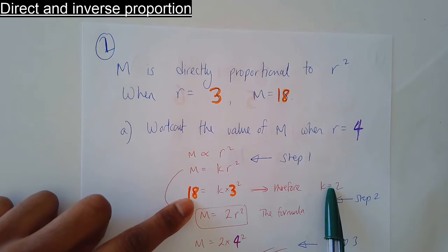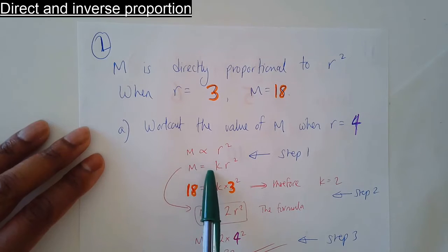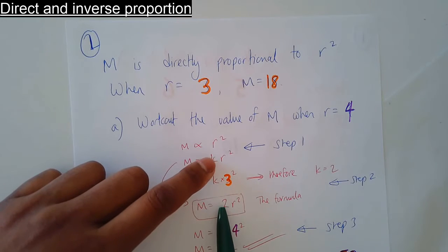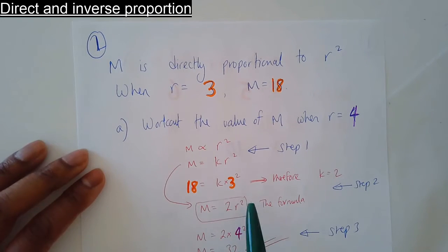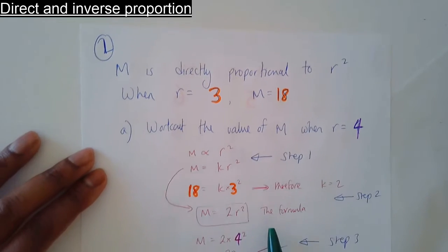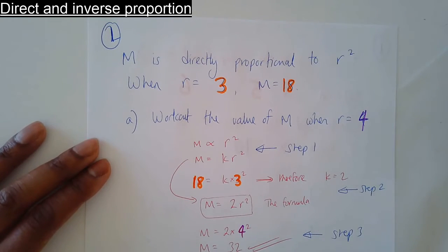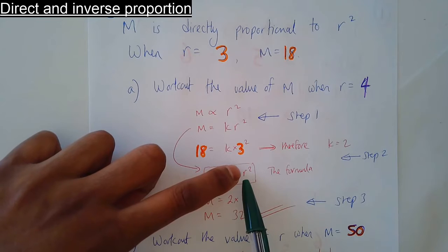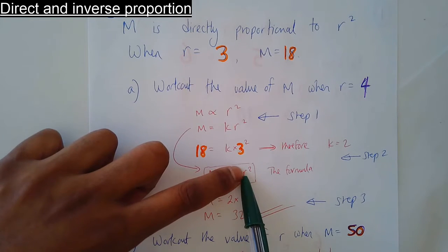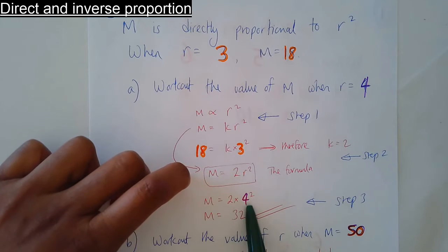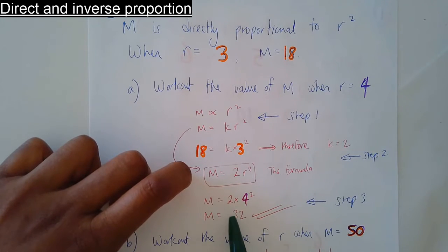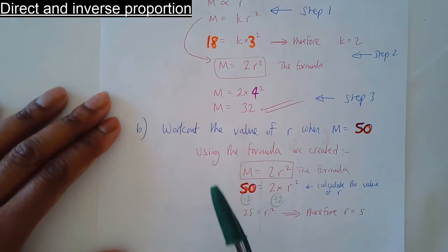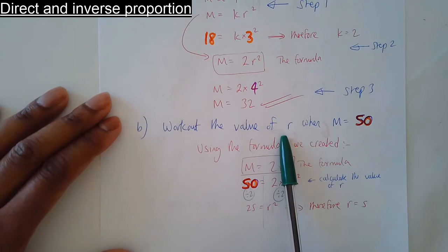k equals 2 — we've just worked out the value of k. So the formula is m equals 2r squared. That's the formula we're going to use to answer this question. Replace r with 4: 4 squared is 16, and 16 times 2 is 32.